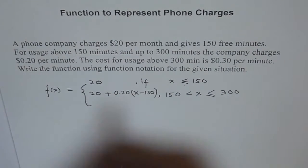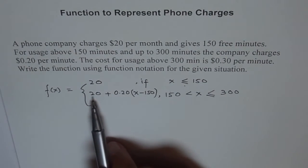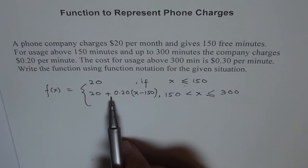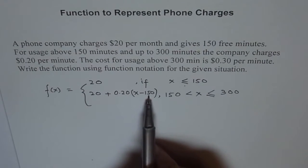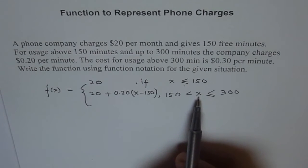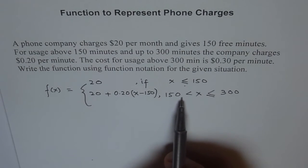So it is $20 plus 20 cents more for every minute over 150. So that is when x is greater than 150 but less than 300 minutes.